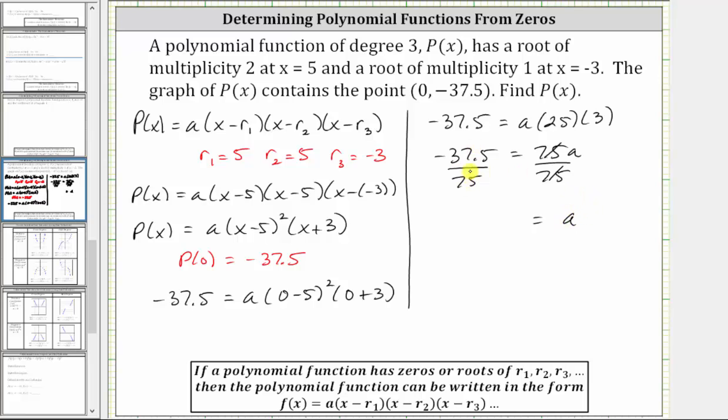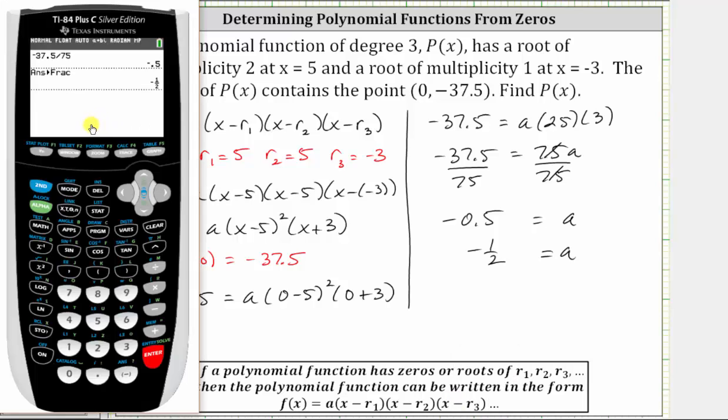To solve for a, we divide both sides by 75. Simplifying on the right, we have a. A is equal to this quotient here, and negative 37.5 divided by 75 is equal to negative 0.5, or if we want negative one-half. Of course, if we needed to, we could check this on the calculator, which I've done here.